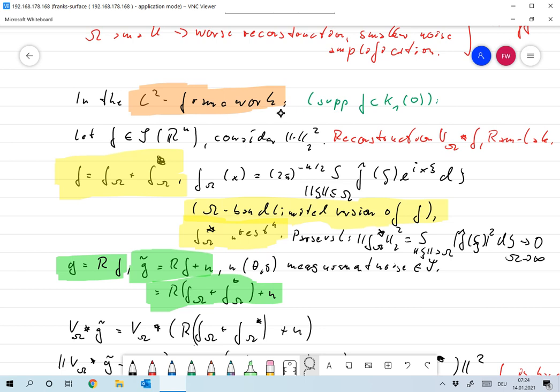I'm writing n here but of course we are thinking about n equals two. So we are considering noise in the Euclidean norm.